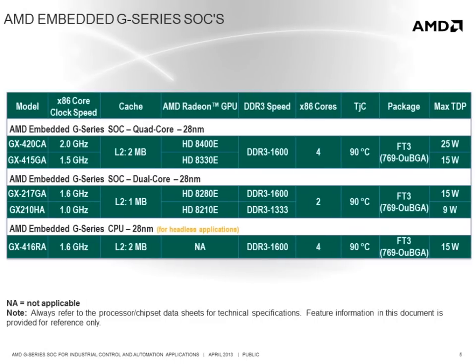Looking at the specifications for the G-Series SOC family, it is available in several versions including dual and quad core processors ranging from 1 to 2 GHz with 9 to 25 watt thermal design power. G-Series SOCs are available with Radeon HD 8000 series graphics, as well as one model without graphics, which offers a cost-effective solution for high performance applications that do not require any graphics. All versions of the G-Series SOC are pin compatible, enabling a single board design to support any of the SOCs.